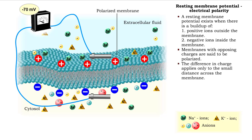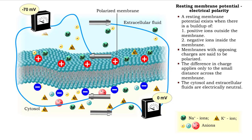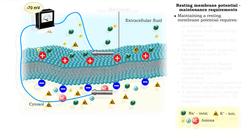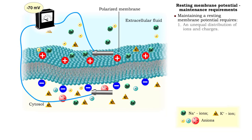The difference in charge inside and outside the membrane only occurs close to the membrane. The cytosol and extracellular fluids are electrically neutral. A typical value for a resting membrane potential is minus 70 millivolts. The resting membrane potential is maintained by three factors.